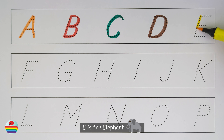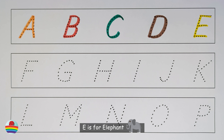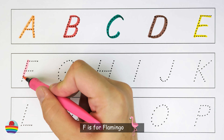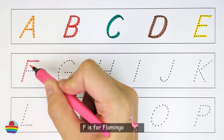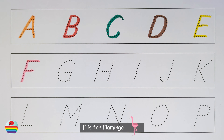E. E is for elephant. E. F. F is for flamingo. F.